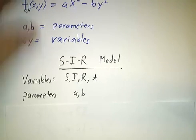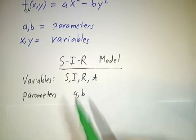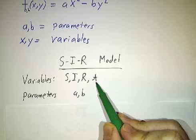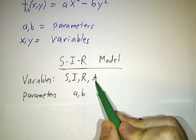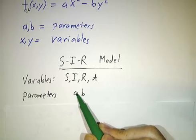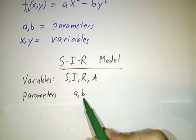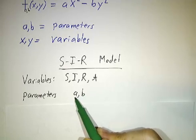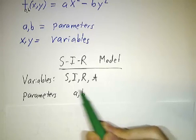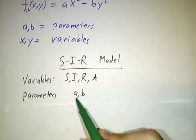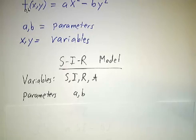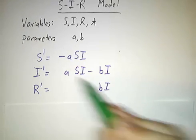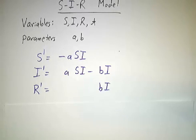So in our SIR model, we had variables. The number of susceptibles, infected and recovered were variables. Time was a variable. And s, i and r were all functions of t. And then our parameters were a and b, the transmission coefficient and the recovery coefficient. Different kinds of epidemics might have different values of a and different values of b, but they're all in the same family. And for each particular epidemic, a is a constant, b is a constant. And then we had our equations, and in terms of those constants, we could figure out what s, i and r were doing over time.